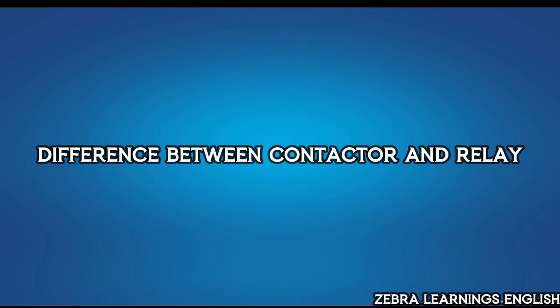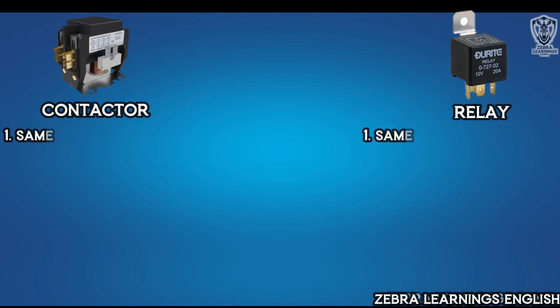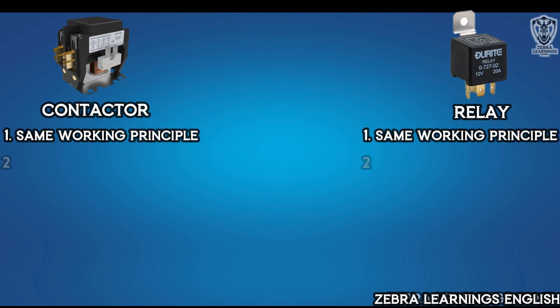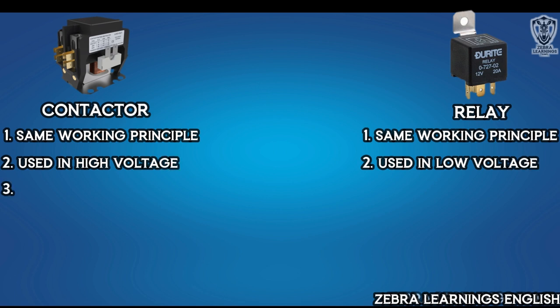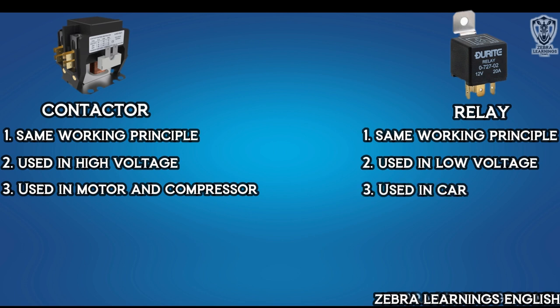Now we can see the differences between contactor and relay. Both do the same job, but we use contactor in high-voltage equipment and we use relay in low-voltage equipment. Contactors are used in high-voltage equipment like motors and compressors. Relays are used in low-voltage equipment like car wiper and headlights. This is the difference between the contactor and relay.